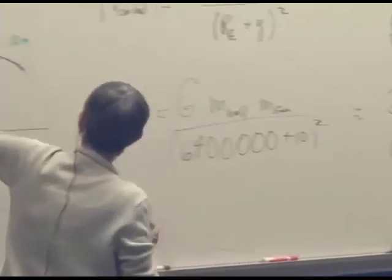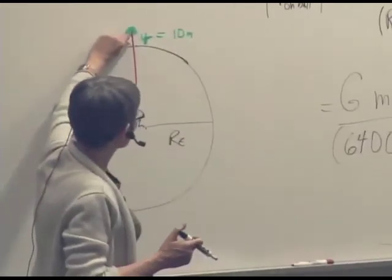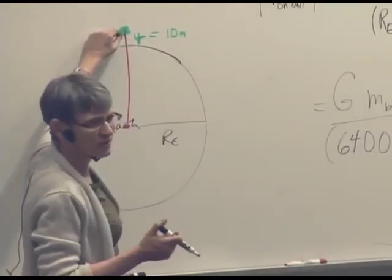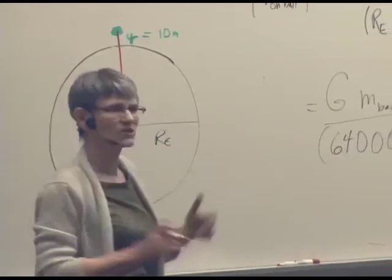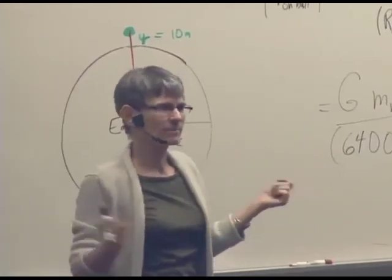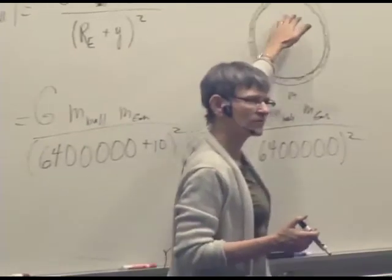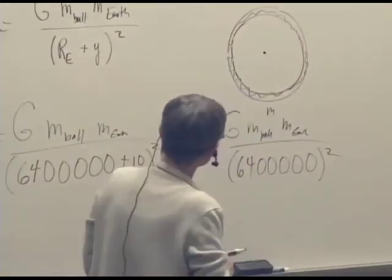So basically, we can say, as long as the distance from the Earth is extremely small compared to the radius of the Earth, then we can treat everything as if it's sitting right there. We can ignore this 10 meters.